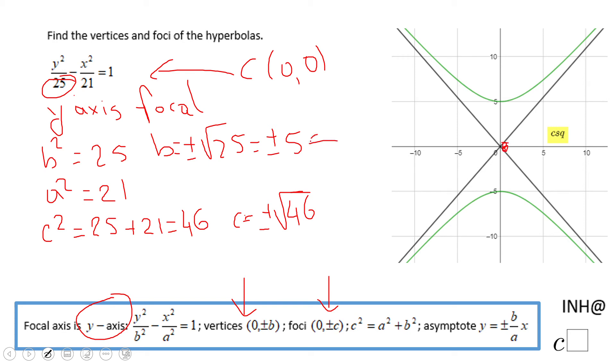Then I'm looking at b and going 5 up and 5 down to get the vertices. Then I look at c and go square root of 46 up and down to get the foci.